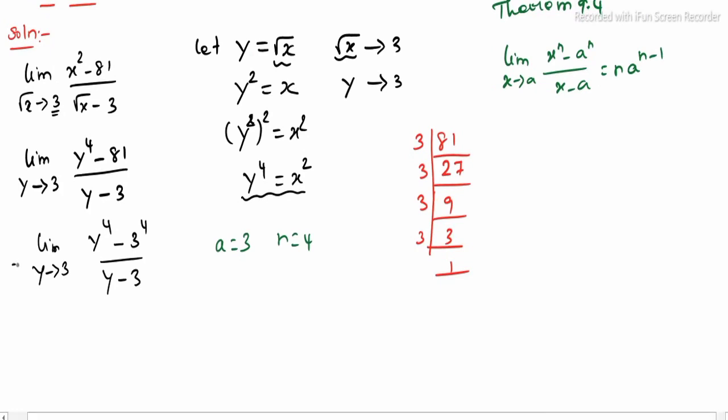Now we apply the values: n is 4 into a is 3, all to 4 minus 1. So 4 into 3 cube. 4 into 3 cube is 27. 4 sevens are 28, left out 2. 4 twos are 8, 8 plus 2 is 10. 108 is the answer.